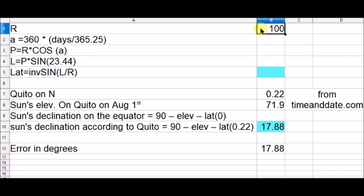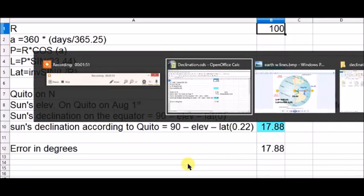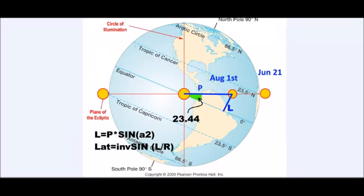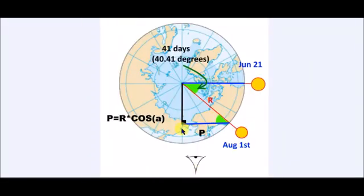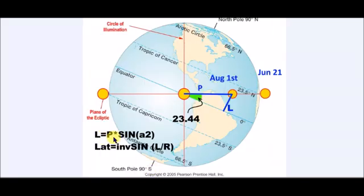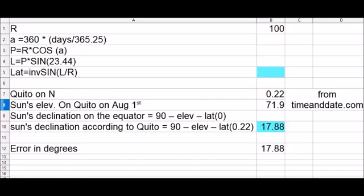So here's the R, I presume just any number, 100. And the angle, let's get back to the drawing. So we need to calculate P, then L, then latitude. Let's put that against the spreadsheet. P, L, latitude.